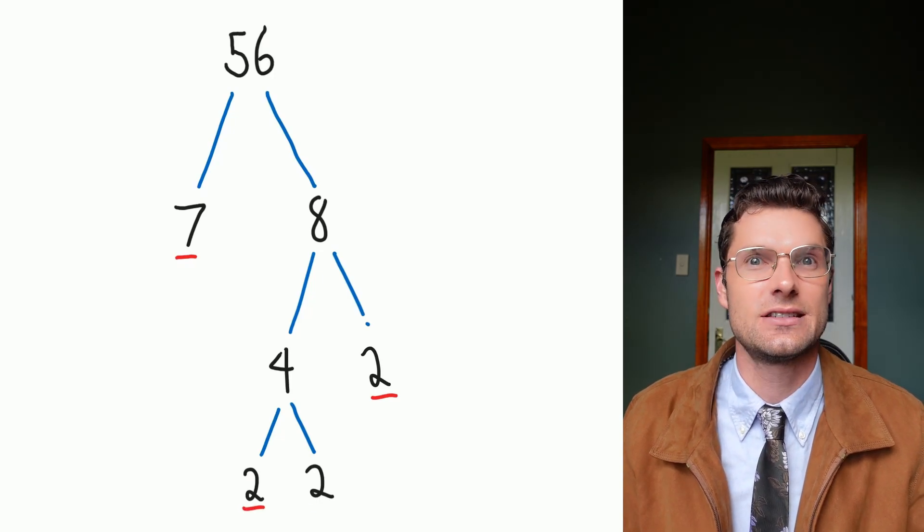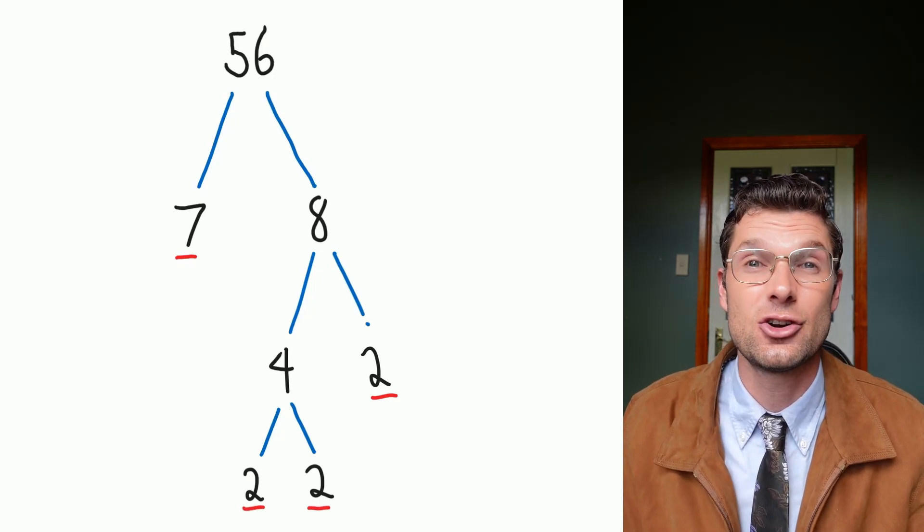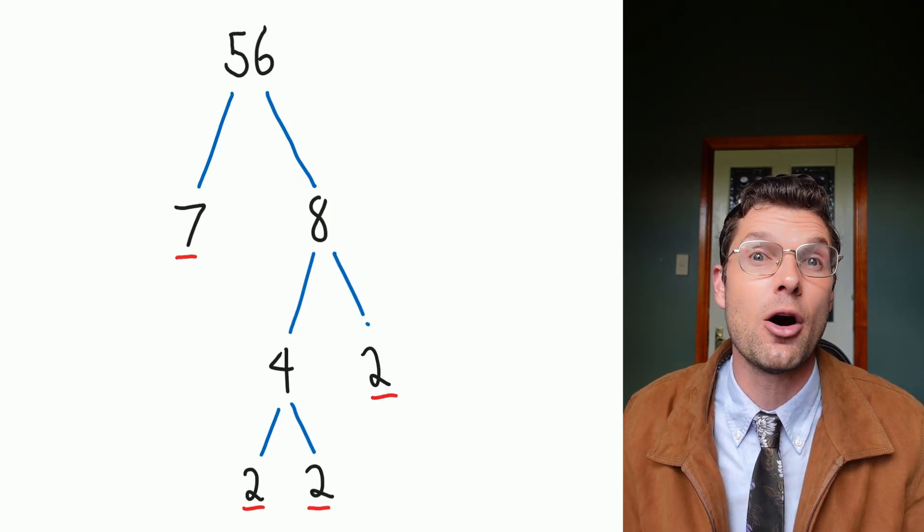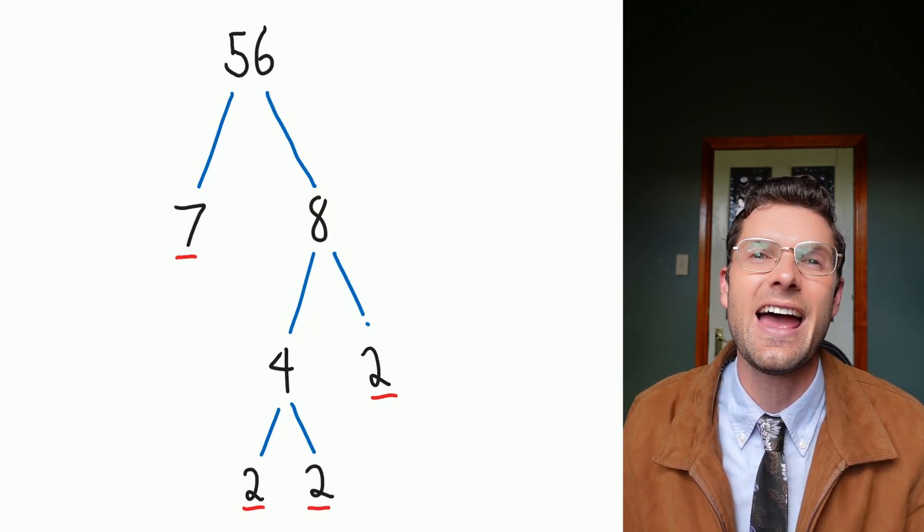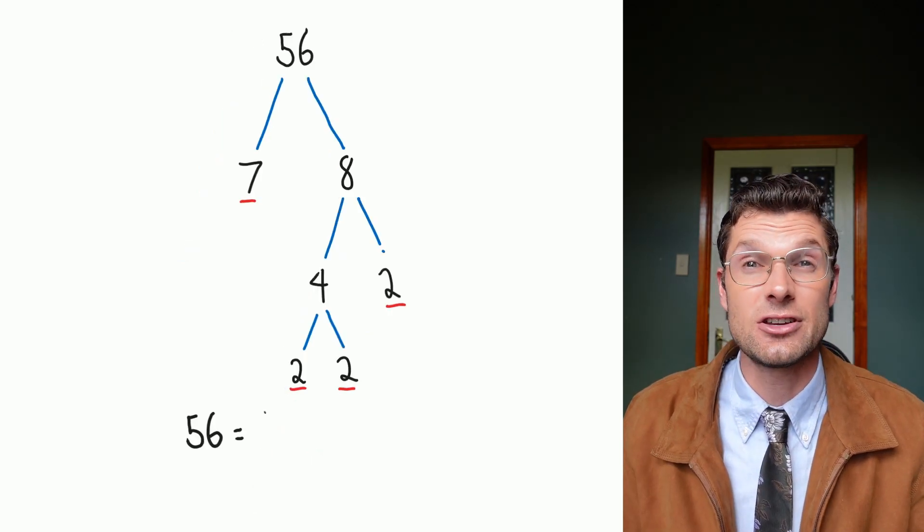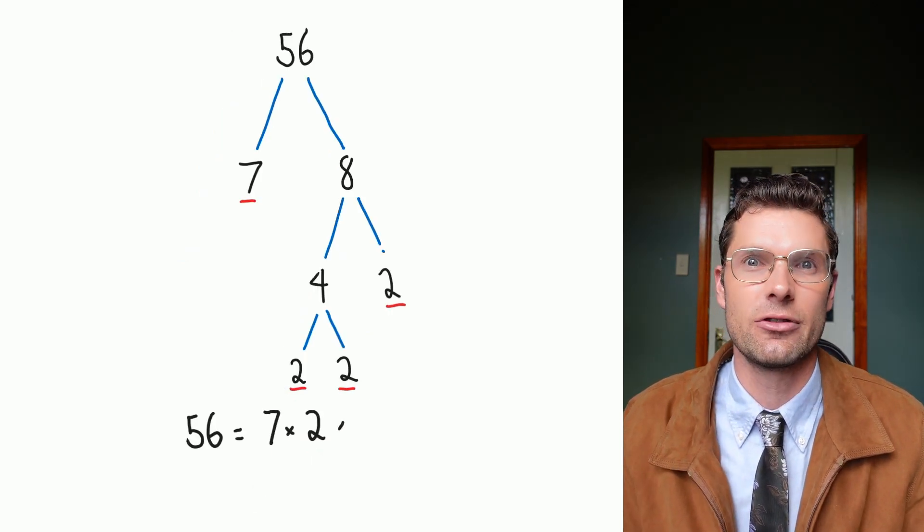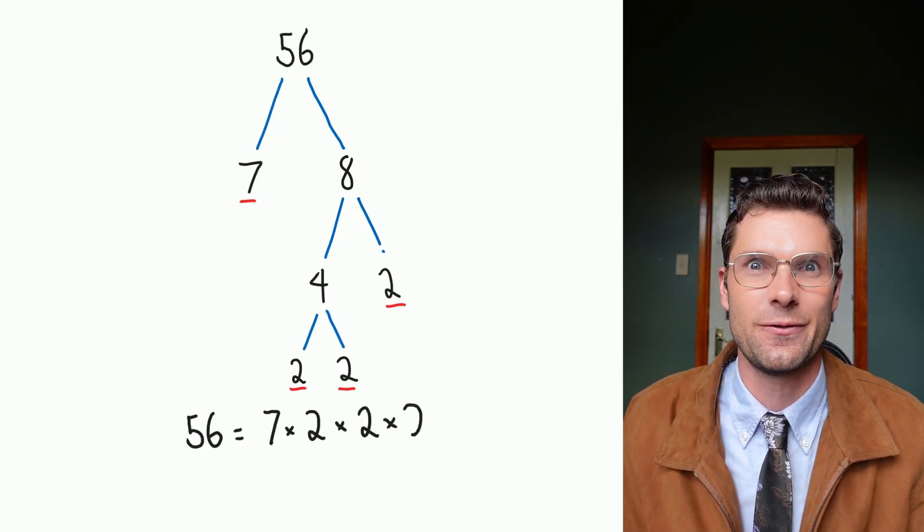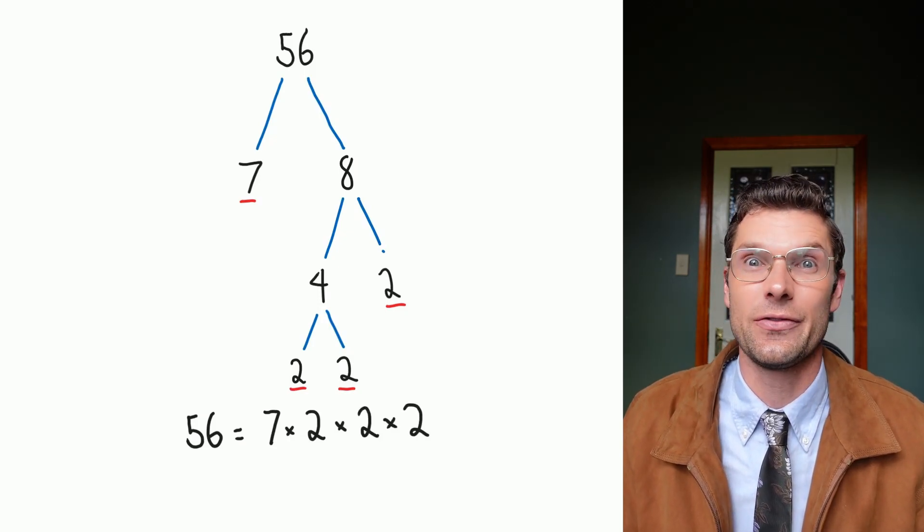So now I've got 7, 2, 2, and 2. To make sure I got this correct, all I've got to do is multiply these prime factors together. And if it gives me the answer of 56, well, I know I got it right. So 7 times 2 is equal to 14, times 2 is equal to 28, times 2 is equal to 56. So that means I got this correct.